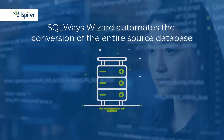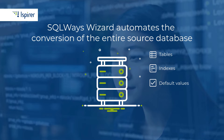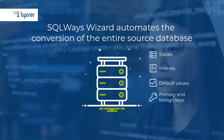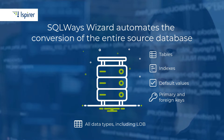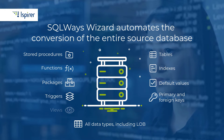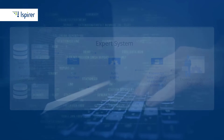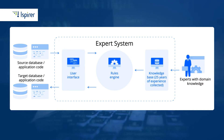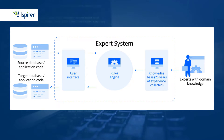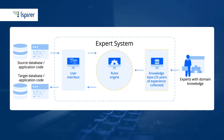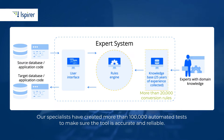With SQL Waze Wizard, you can automate the conversion of your entire source database. The tool supports schema conversion, including tables, indexes, default values, primary and foreign keys. It migrates data of all types, including LOB, and type mapping settings are also available. It converts SQL objects such as stored procedures, functions, packages, triggers, and views. In essence, SQL Waze Wizard is an expert system which provides high-quality automated conversion of all database components. At its core, there is a combination of a rules engine and knowledge base containing more than 20,000 conversion rules. Over the course of its development, our specialists have created more than 100,000 automated tests to make sure the tool is accurate and reliable.